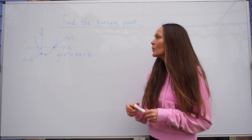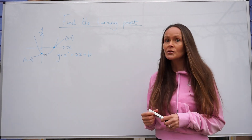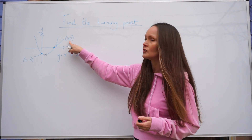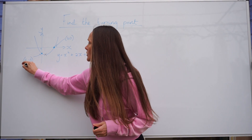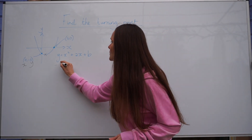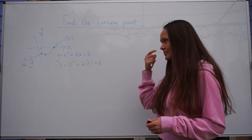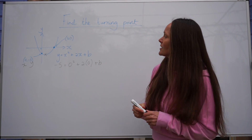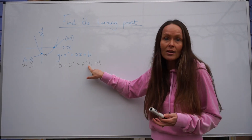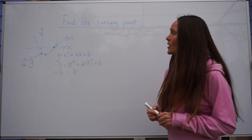Before you can find the turning point we need to know what the real equation is first. To work out what a and b are, I'm going to start by substituting in the coordinates given in the question. Remember x is the first value and y is the second. When I substitute those numbers into this equation, it becomes minus 5 equals 0 squared plus a multiplied by 0 plus b. We can simplify this: 0 squared is 0, and a multiplied by 0 is 0. So we have minus 5 equals b. We've already worked out the value of b.